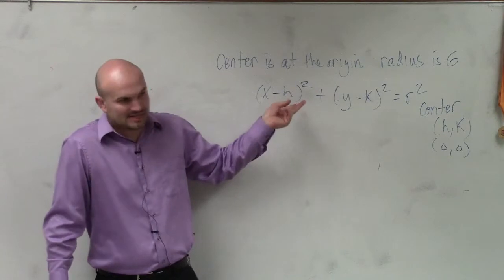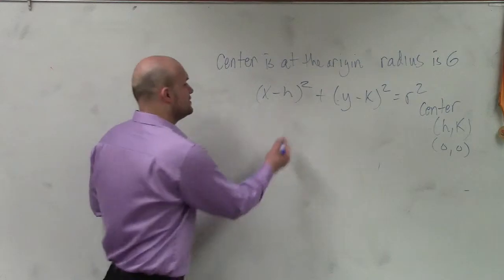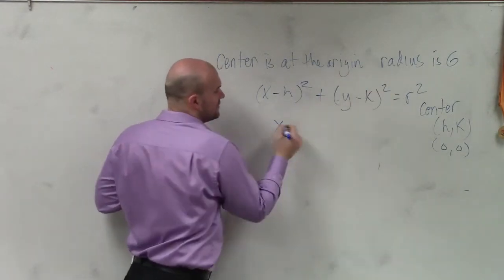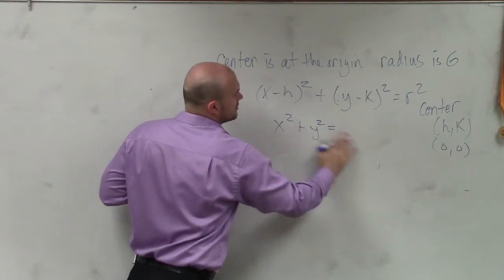Well, x minus 0 is x. Y minus 0 is y. So therefore, my equation, or then my radius is 6. So I put a 6 in for the r. So it's x squared plus y squared equals 6 squared.